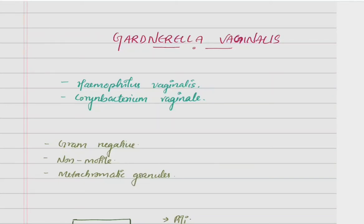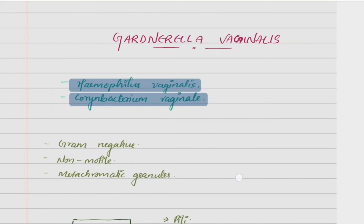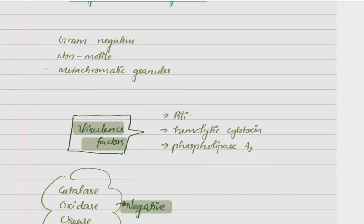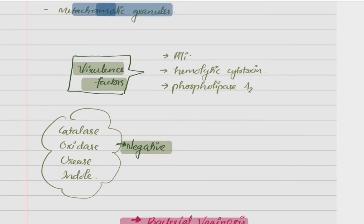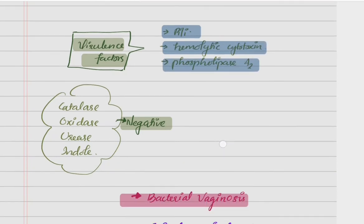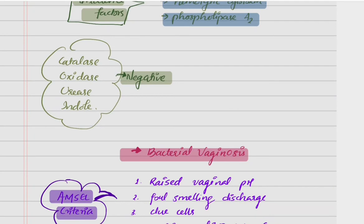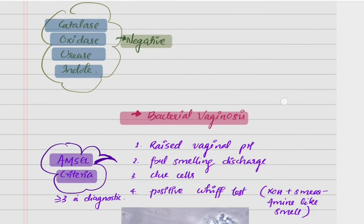Gardnerella vaginalis was formerly known as Haemophilus vaginalis or Corynebacterium vaginale. It is a small gram-negative, non-motile, pleomorphic organism which shows metachromatic granules. The important virulence factors are partly hemolytic cytotoxin and phospholipase A2. The organism is catalase negative, oxidase negative, urease negative, and indole negative.